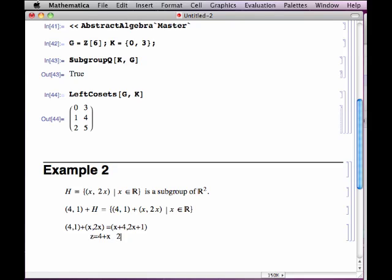And therefore 2x plus 1 is 2 times (z minus 4) plus 1. And that's equal to 2z minus 7.